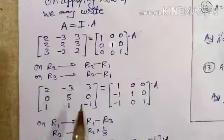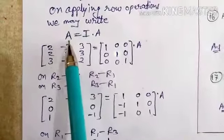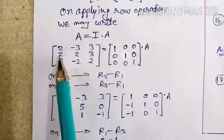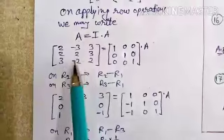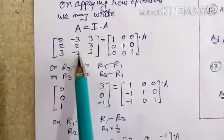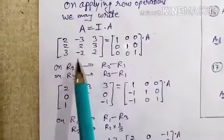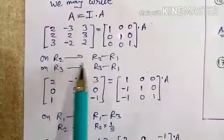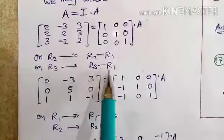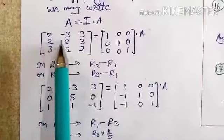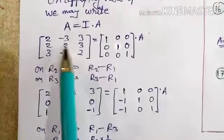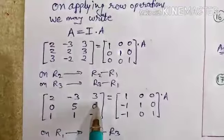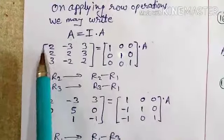Our target is to convert matrix A into the identity matrix I — that is, [1, 0, 0 / 0, 1, 0 / 0, 0, 1]. To begin, apply on R2: R2 minus R1, and on R3: R3 minus R1. This means from the second and third rows we subtract the first row. The first row stays as it is.